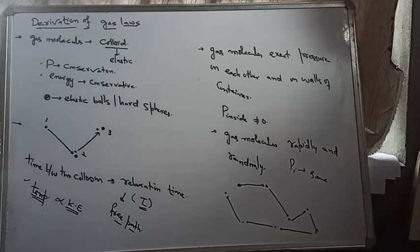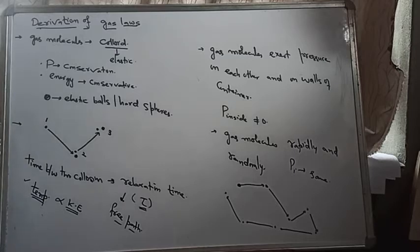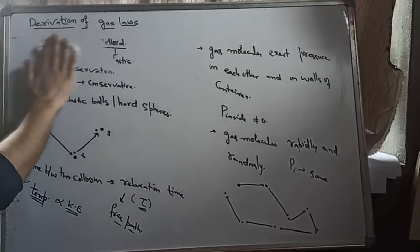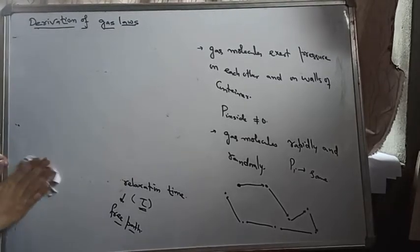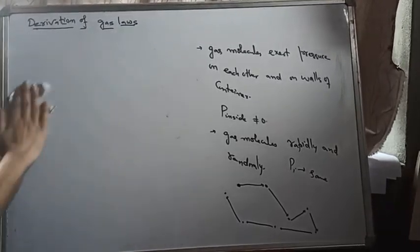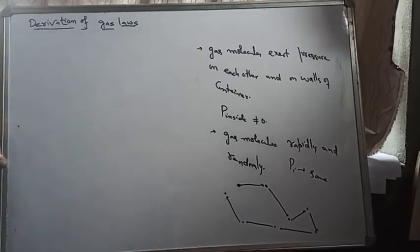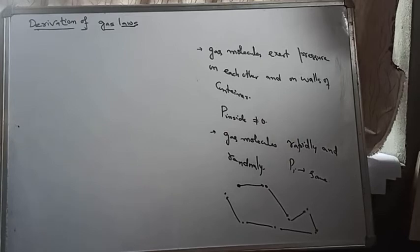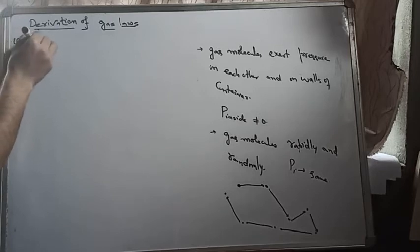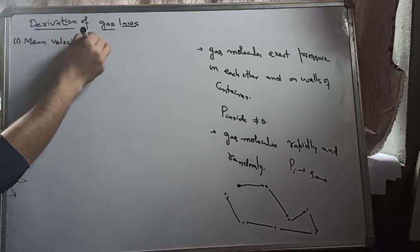We discussed what we called the average velocity of gas molecules. Because there are a large number of molecules in the gas, we always take averages to calculate the velocity. The first velocity we define is called the average velocity, or mean velocity of gas.